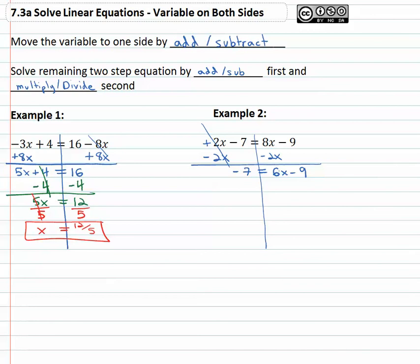Now that we have the x's in one place, we want to get rid of that minus nine, which is in the way. The opposite of a minus nine is a positive nine on both sides, doing the same thing on both sides. The nine subtract out to zero. Negative seven plus nine is two equals six x.